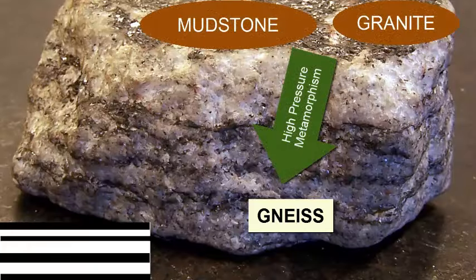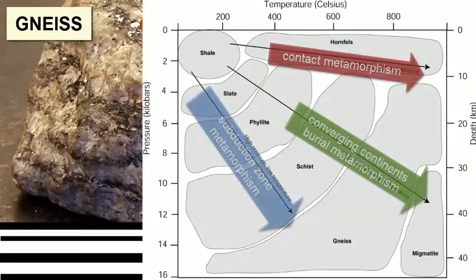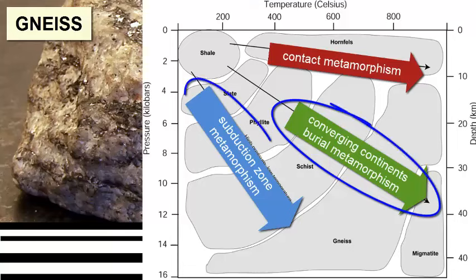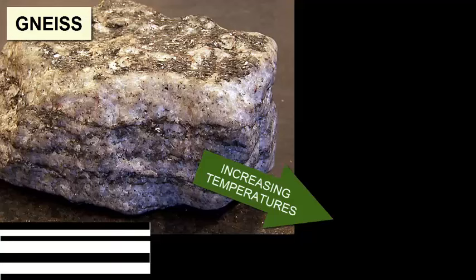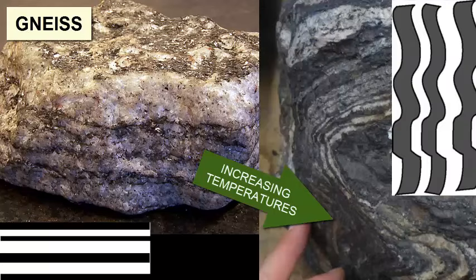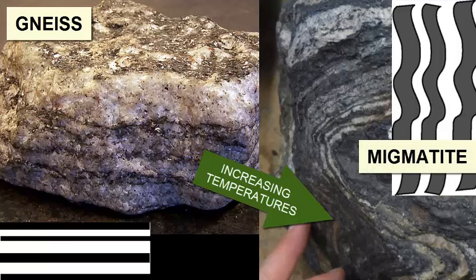As metamorphic grade continues to increase, the dark and light-colored minerals begin to separate into bands known as gneissic texture, and the rock is a gneiss. Gneiss forms through high grades of metamorphism of mudstone or granite in settings where pressure increases with temperature, such as deep burial, converging continents, or subduction zones. Increasing temperatures at this point can cause the light-colored bands to melt, so that a fraction of the rock is molten but not all of it. This leads to folding of the bands and a rock displaying contorted, alternating colored bands. When the molten bits solidify, they create small layers of granite within the metamorphic rock. We call this rock migmatite. Any further increase of temperature will cause full rock melting and lead to igneous rocks.